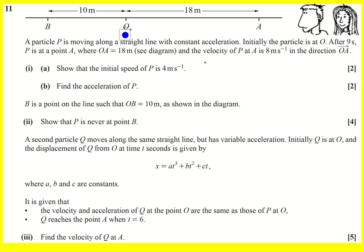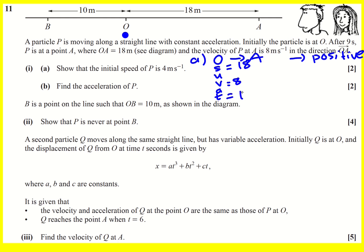This is a constant acceleration question, and hence we can apply SUVAT from O to A, making to the right positive. So the displacement is 18, V is equal to 8, and T is equal to 9. We're actually asked to find the acceleration in the second part, but I'm going to go straight ahead and find the initial speed. I can use S equals one half times U plus V times T.